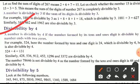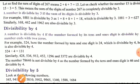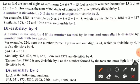Divisibility by 4: a number is divisible by 4 if the number formed by its tens and ones digits is divisible by 4, or the number ends with two zeros. For example, 524 — the number formed by tens and ones digits is 24, and 24 is divisible by 4, so 524 is divisible by 4. Other examples include 428, 536, 912, 452, 1296, and 33372.